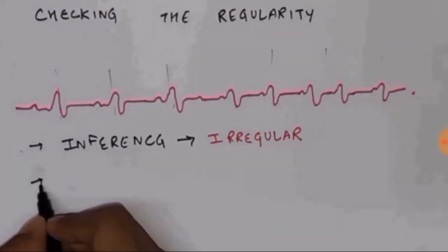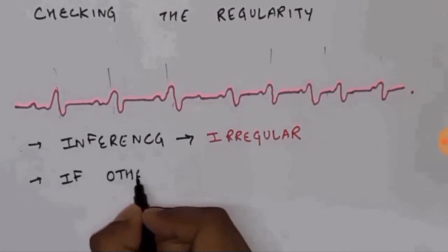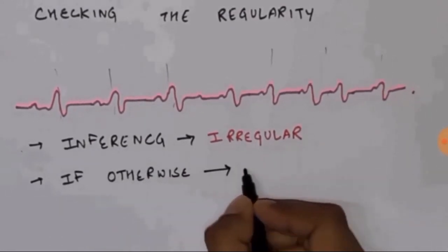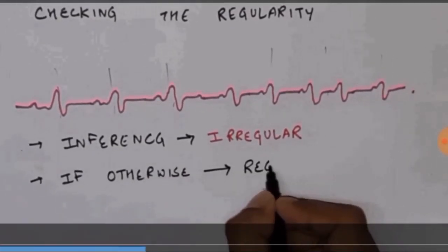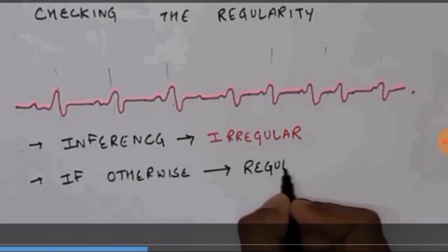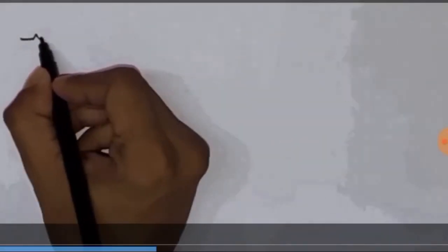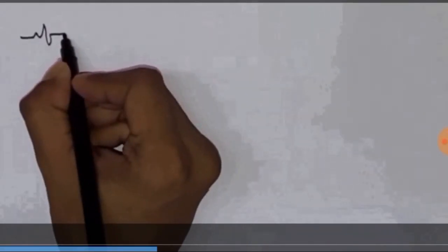If you look other way around, or if otherwise, it is regular. What do you mean? What I mean is that if the three black lines correspond exactly with the QRS complex as we move forward, it is regular rhythm. Our first criteria is fulfilled. Now, let us see, let us go to another short topic.